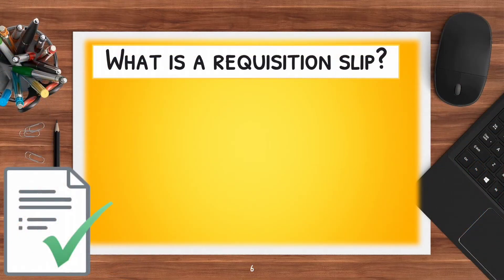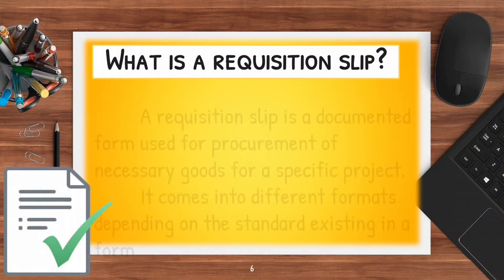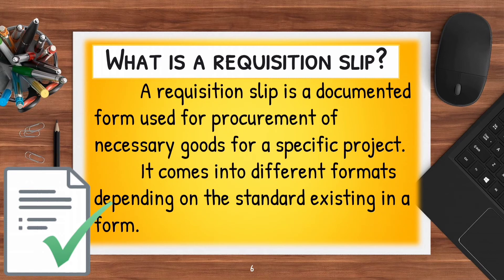What is a requisition slip? A requisition slip is a documented form used for procurement of necessary goods for a specific project. It comes in different formats depending on the standard existing in a form.